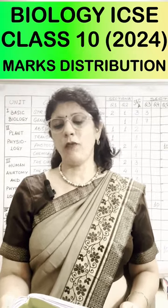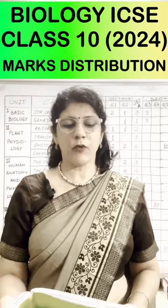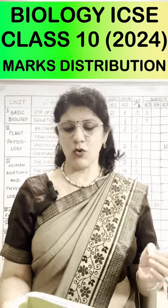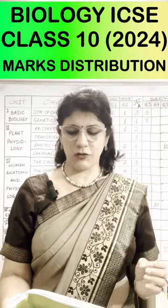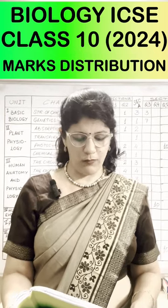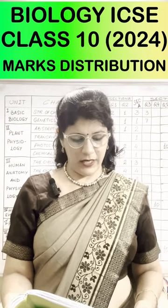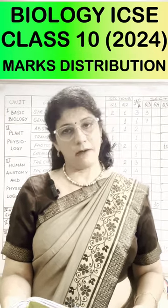The grand total is 100 marks: Unit 1 — 21 marks, Unit 2 — 22 marks, Unit 3 — 44 marks, Unit 4 — 5 marks, and Unit 6 — 8 marks.